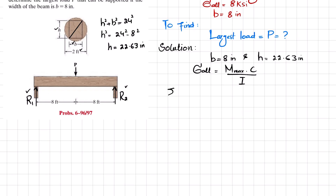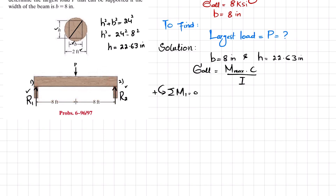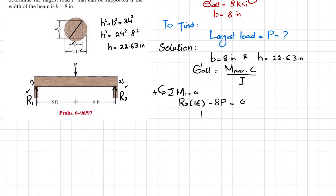We will solve using equilibrium conditions. Taking the sum of all moments about point O1, with counterclockwise as positive: the moment due to R2 with perpendicular distance 16 feet is counterclockwise, so positive: R2 × 16. The moment due to load P at a perpendicular distance of 8 feet is clockwise, so negative: minus 8P. Setting this equal to zero gives 16·R2 = 8P, so R2 = P/2.